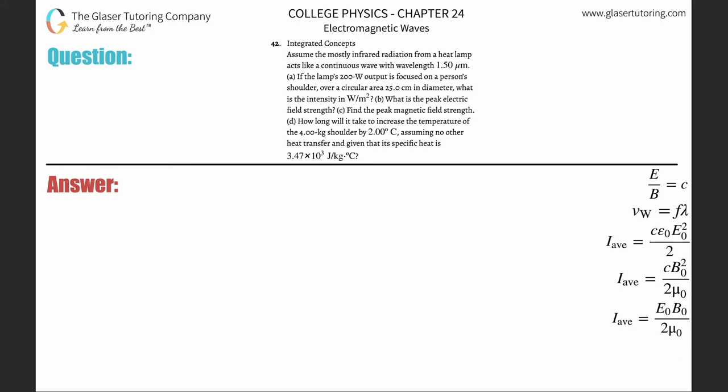Number 42, integrated concepts. Assume the mostly infrared radiation from a heat lamp acts as a continuous wave with a wavelength of 1.5 micrometers. Letter A: If the lamp's 200 watt output is focused on a person's shoulder over a circular area of 25 centimeters in diameter, what is the intensity in watts per square meter?